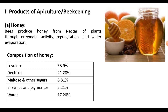The chemical composition of honey contains fructose of 38.9 percent, dextrose of 21.2 to 8 percent, maltose and other sugars of 8.81 percent. Apart from that, it also contains enzymes and pigments of 2.21 percent, and water of 17.20 percent.